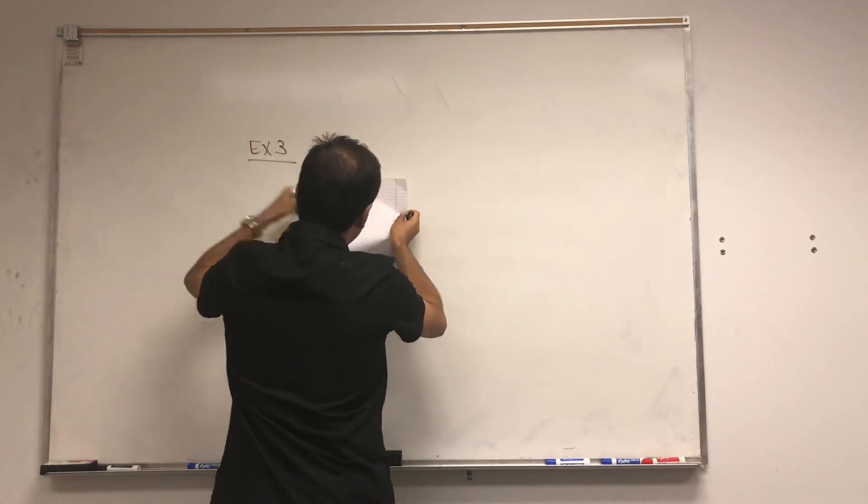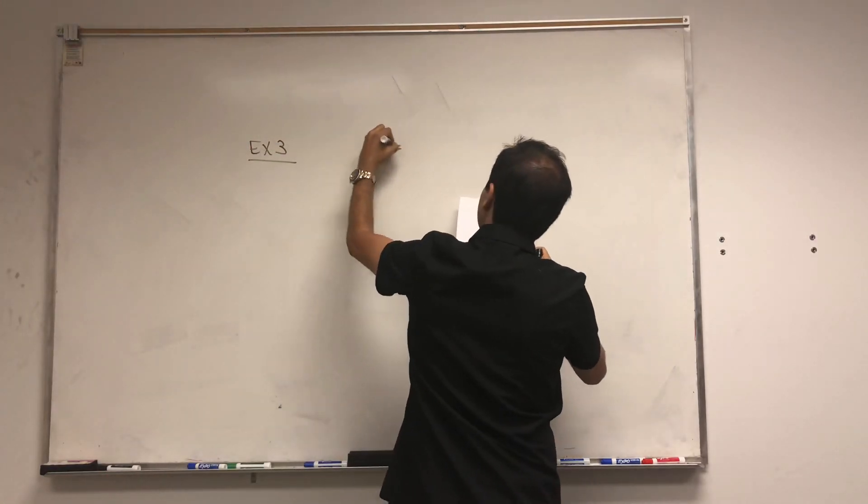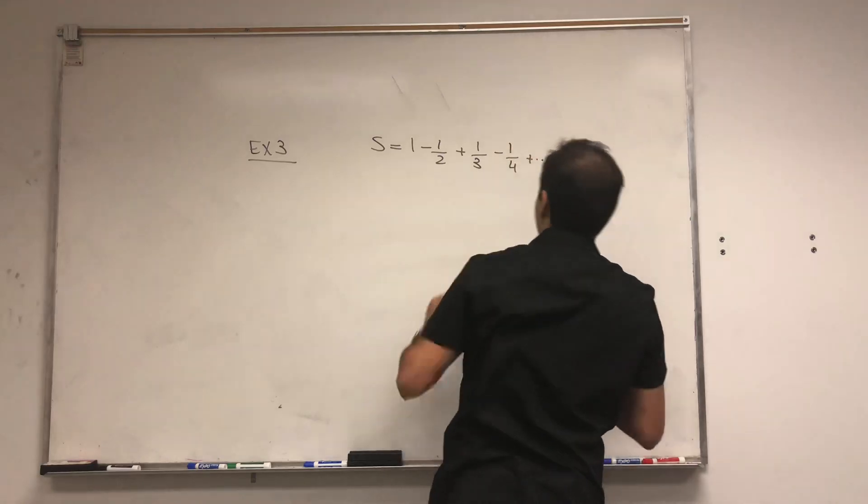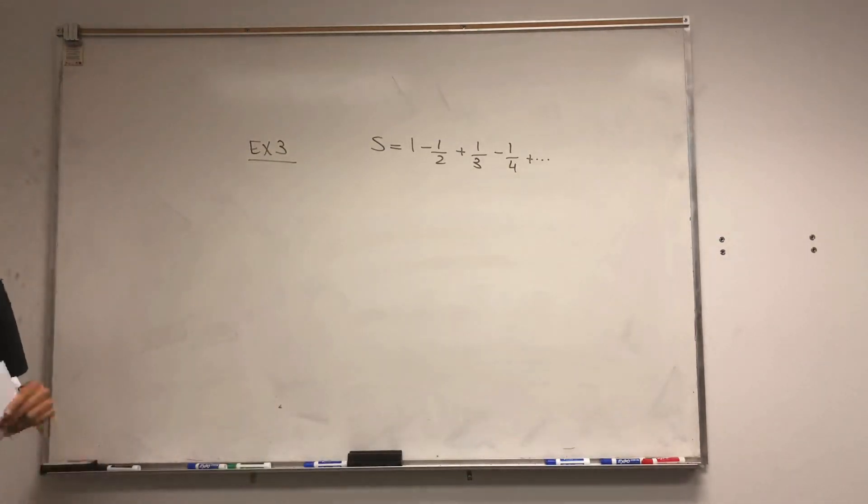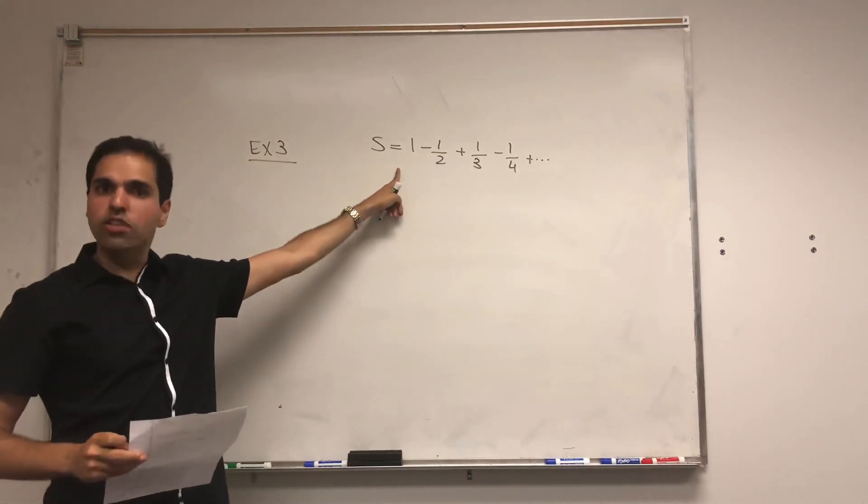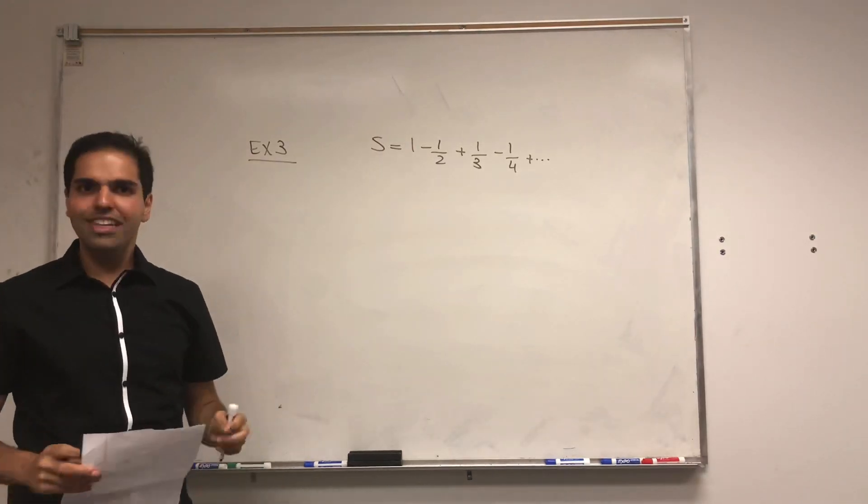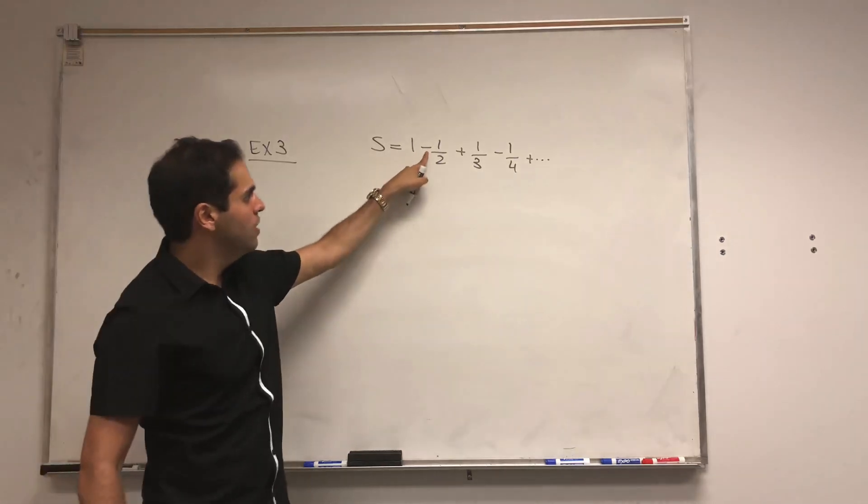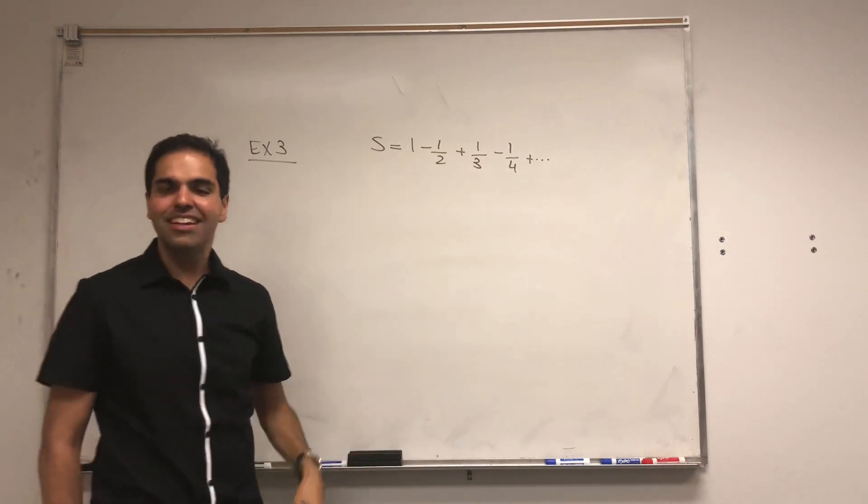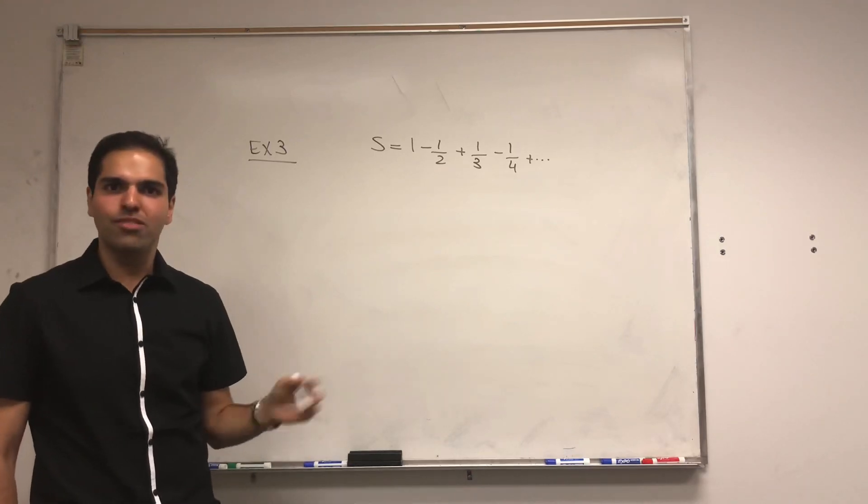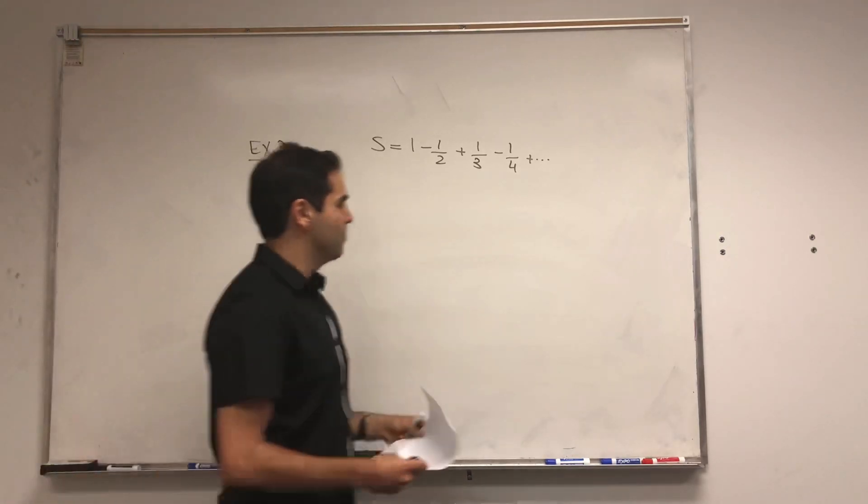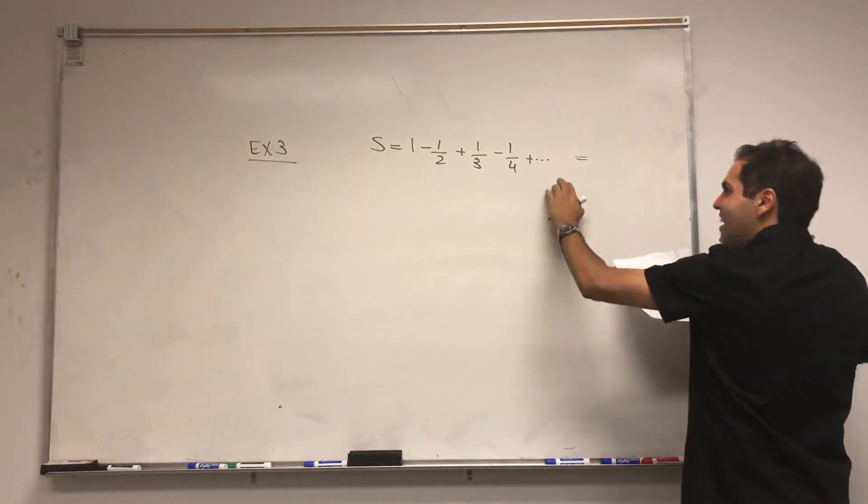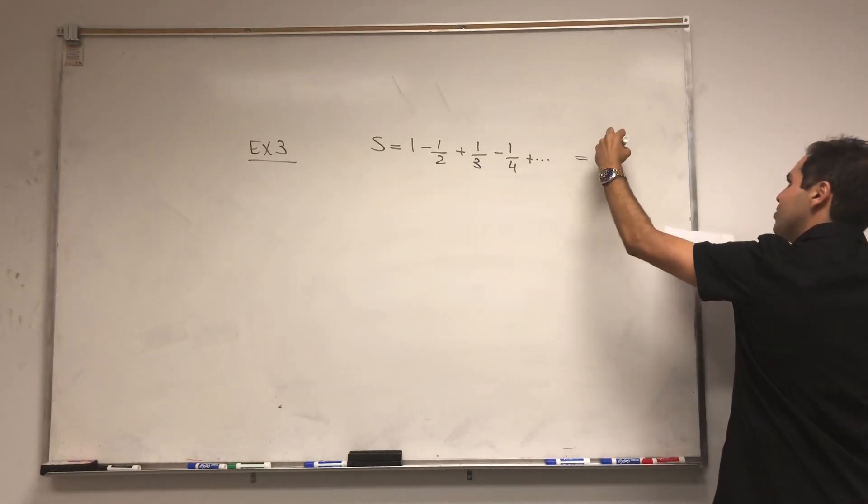So example 3. Suppose S is 1 minus 1 half plus 1 third minus 1 quarter plus dot dot dot. And here's the cool thing about this. This series is actually convergent. Because by this alternating series test, however, what makes this difficult is it's not absolutely convergent. If you replace the minuses with pluses, then you get 1 plus 1 half plus 1 third plus 1 quarter, and this actually goes to infinity. And it turns out you can calculate this sum series, and it equals to ln of 2.